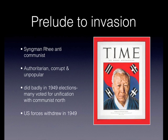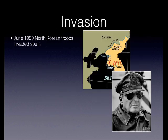US forces actually withdrew in 1949. Syngman Rhee had been asking the US to supply the South Korean army with more advanced weapons — artillery and tanks — but they refused, worried that Syngman Rhee might launch an invasion of the North and start a war so recently after the end of the Second World War. The refusal to supply the South Korean army with military equipment meant that the North had a military advantage. In June of 1950, North Korean troops invaded the South with the objective of reuniting the Korean peninsula by military force.